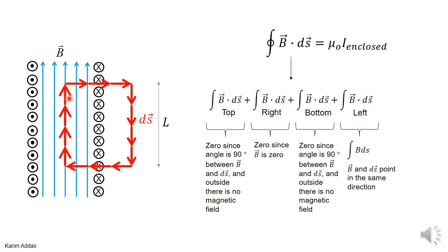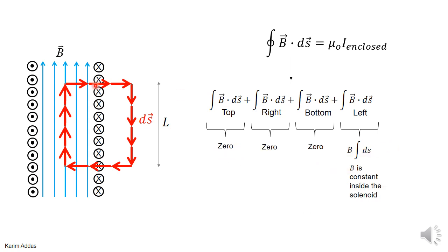Integration of B dot ds on the left side becomes integration of B ds because the angle between B and ds is zero, so B dot ds becomes B ds. Then, if you go to any point along this line, the magnetic field should be constant because the solenoid is infinite, so it doesn't matter if you go up or down, nothing changes, everything is the same. So B goes out of the integration, you get B integration of ds. Integration of ds means you're adding this distance plus this distance plus this distance, basically you're getting this length L. So you get B times L. So this whole integration, the left-hand side, just reduces to B times L.